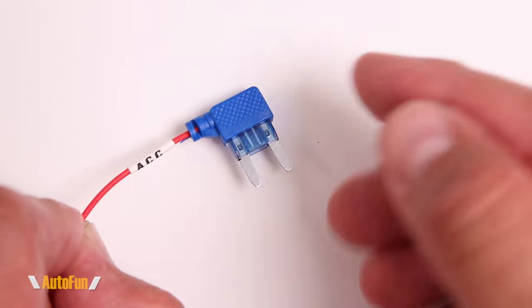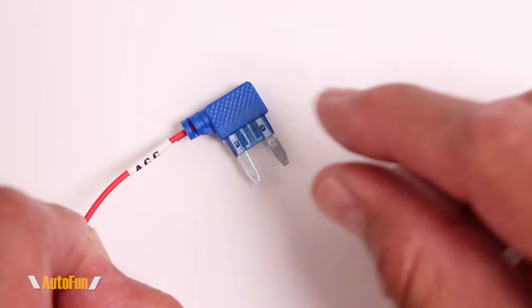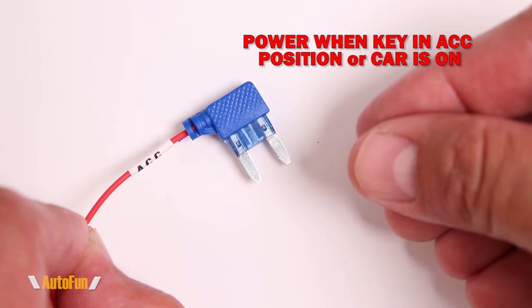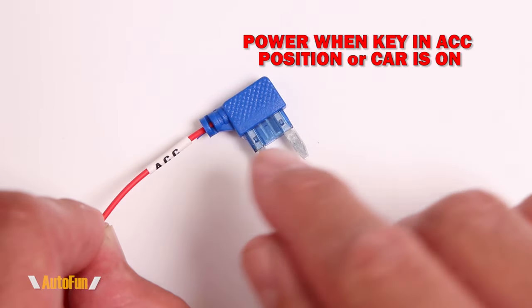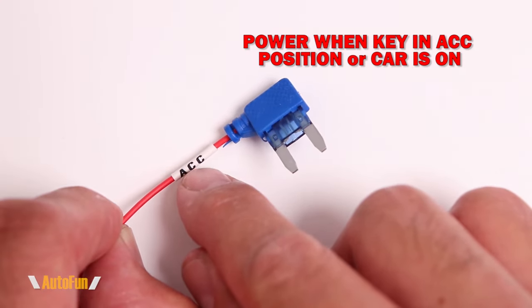The next wire is ACC, and ACC stands for accessory, which means that this should have power when the key is in the accessory position or when the car is fully running. When the car is off there should not be any power going to the ACC wire.